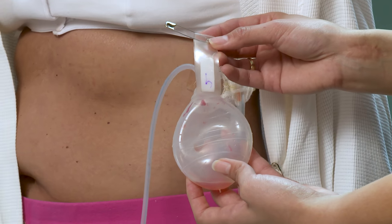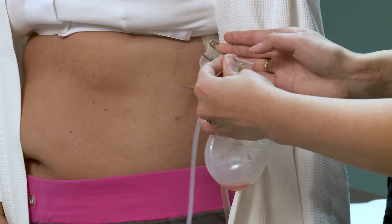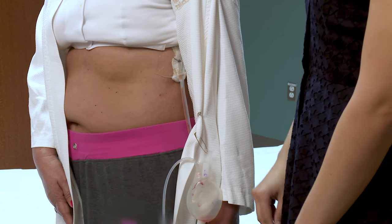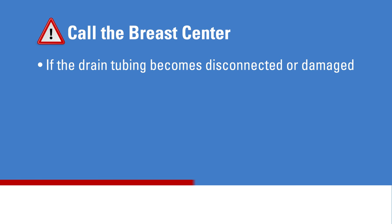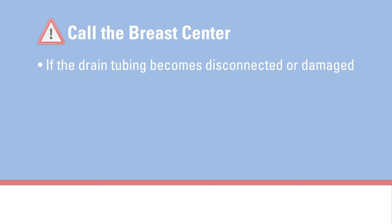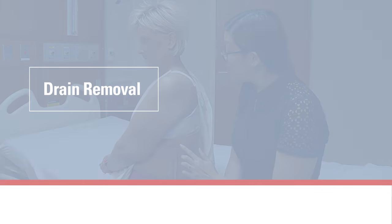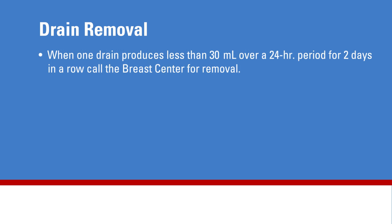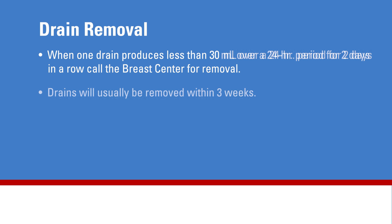Gravity is necessary to keep the drains functioning properly. You must place the bulb below the drain insertion site. Using the plastic tag on the bulb, attach it to your clothing or drain belt. Do not disconnect, bend, compress, or puncture the drain tubing. If the drain becomes disconnected or damaged, contact the breast center. The length of time that your drain remains in place depends on the amount of fluid coming from the surgical site. When one drain produces less than 30 milliliters of drainage over a 24-hour period for two days in a row, your drain is ready to be removed. When your drain output meets this criteria, call the breast center and the nurses will schedule your appointment for your drain to be removed. The drains are usually removed within three weeks of the surgery regardless of the drainage output, however your surgeon may recommend removal at a different time.